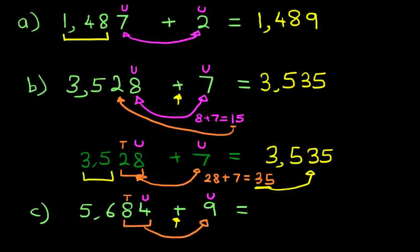The answer is, I'll just write it down here, eighty-four plus nine, and again, you should know this by now, it is ninety-three. The first two digits, again, did not change. So the answer is five thousand, six hundred, and now we've got the ninety-three over here.